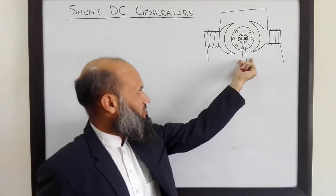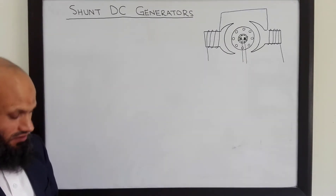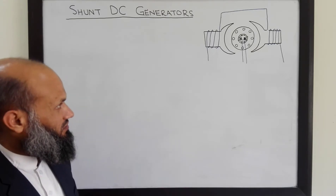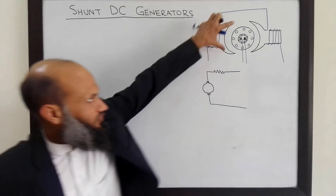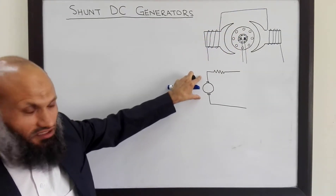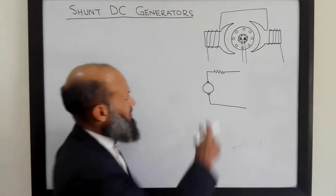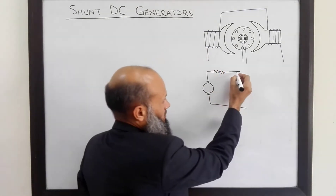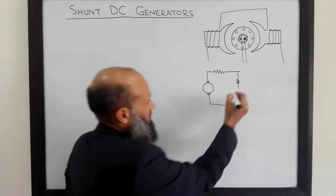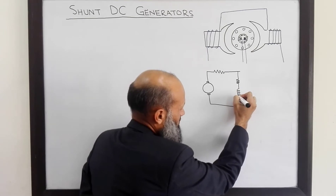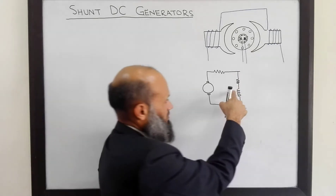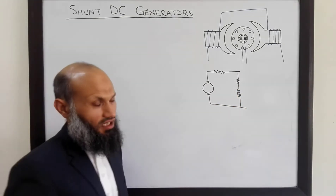In shunt DC generators, the field windings which are on the poles and the armature windings are in parallel. The equivalent electrical circuit of a DC generator is given by this diagram. We have the armature windings depicted by the symbol for the resistance of armature windings, and we have field windings with some resistance — these field windings are in parallel with the armature windings.